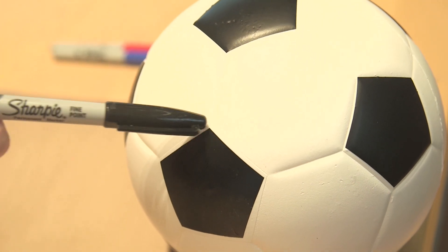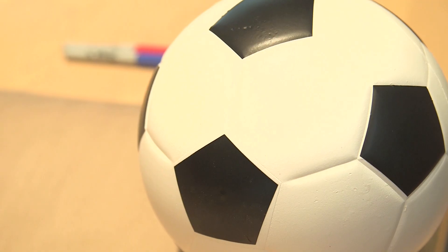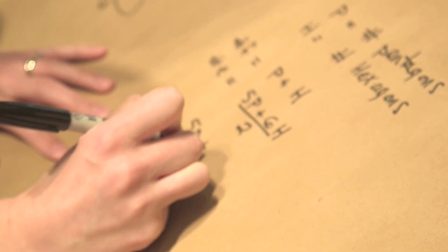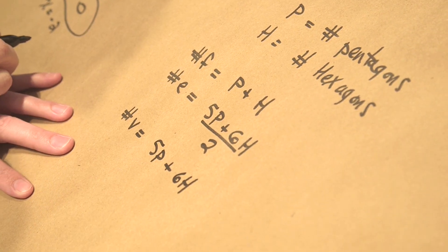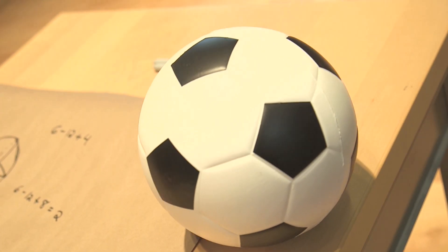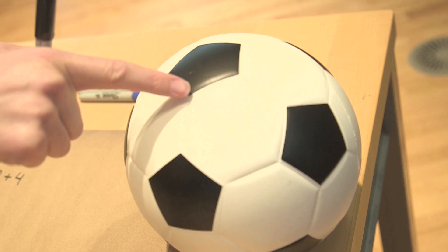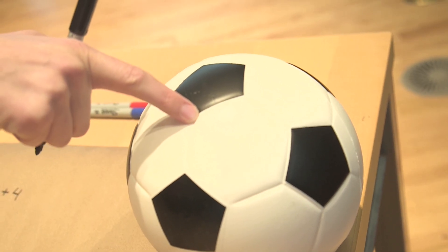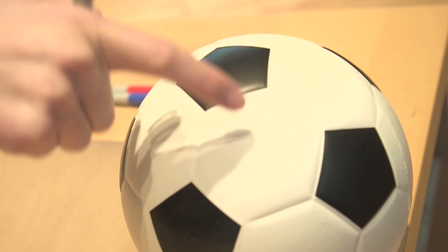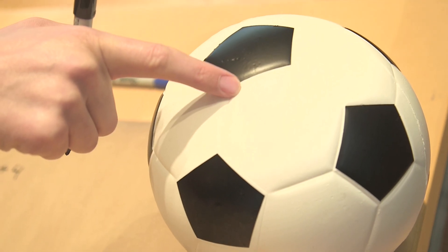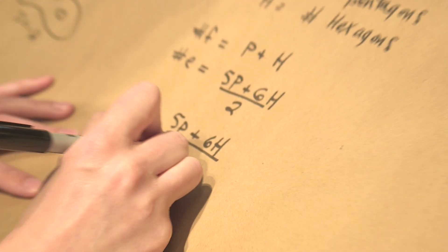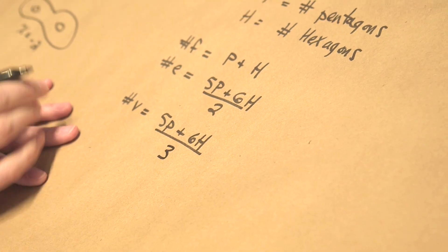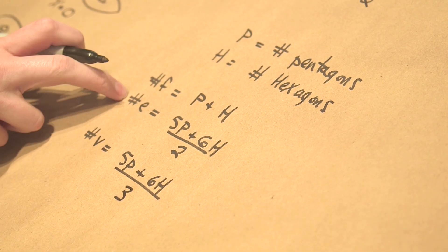So now let's try to count the vertices. The vertices are these points at the corners. So each pentagon has five of those. Each hexagon has six of those. But we over counted again. So how many did we over count by this time? Well, look at this vertex. So how many times do we count that? Well, I counted it on this pentagon, this hexagon, and this hexagon. So it was counted three times. And we really only want to count each vertex once. So I divide my total by three. Okay, so what do we have? I have counted my faces, edges, and vertices.